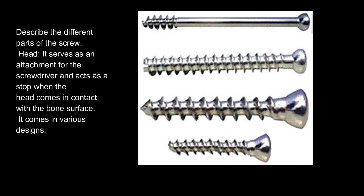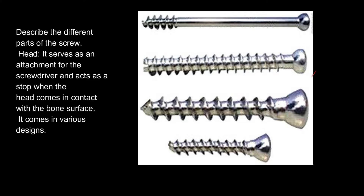Describe the different parts of the screw. Head: it serves as an attachment for the screwdriver and acts as a stop when the head comes in contact with the bone surface. It comes in various designs.